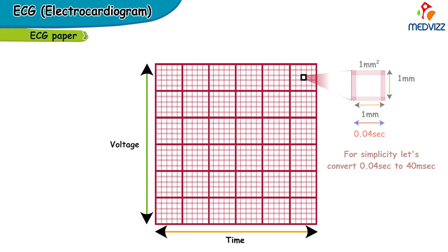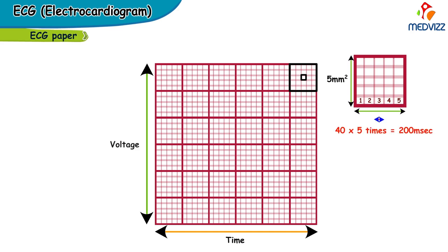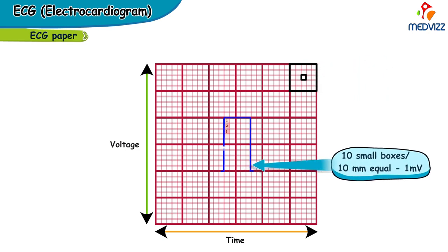The ECG paper also constitutes larger boxes with darker lines, each containing five small boxes. Collectively, each large box is 5 millimeters square in area, so it takes 40 milliseconds times 5, which equals 200 milliseconds, to cover one large box. Vertically, as per standard calibration, 10 small boxes — which is 10 millimeters — equals 1 millivolt.